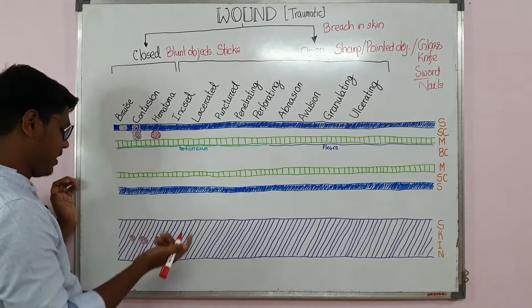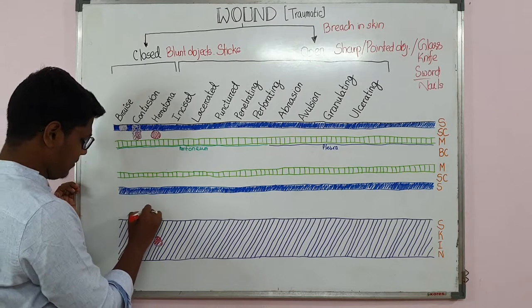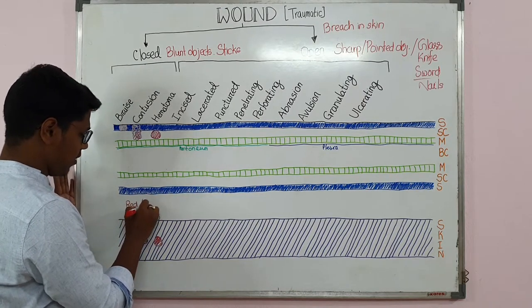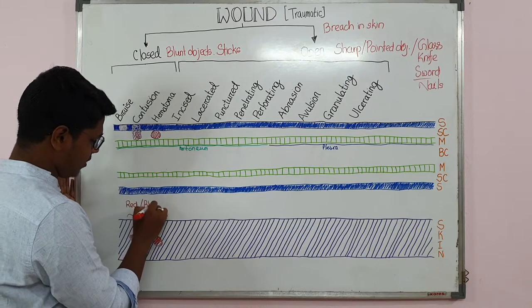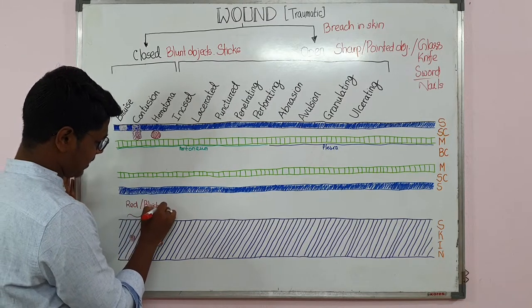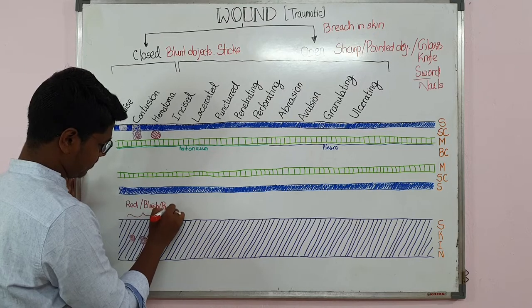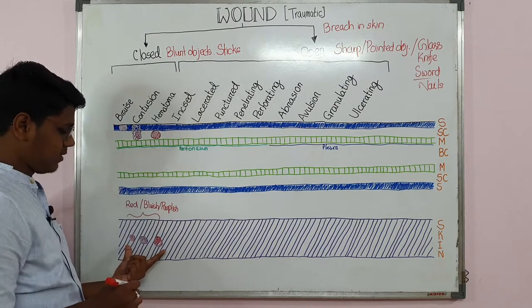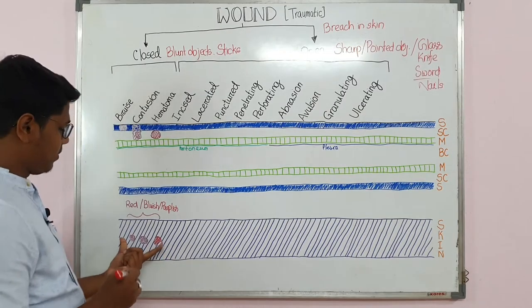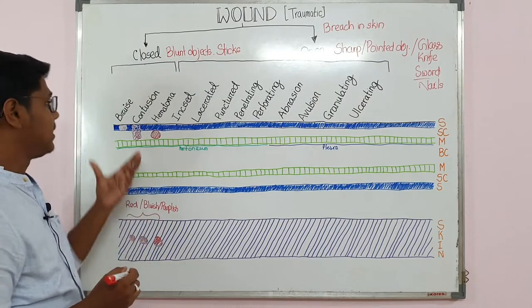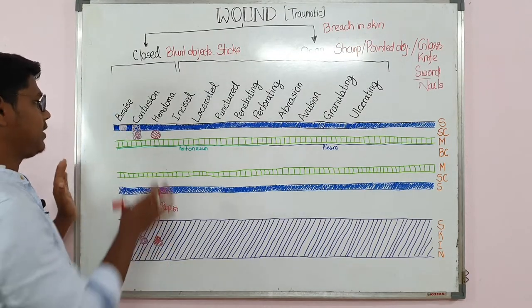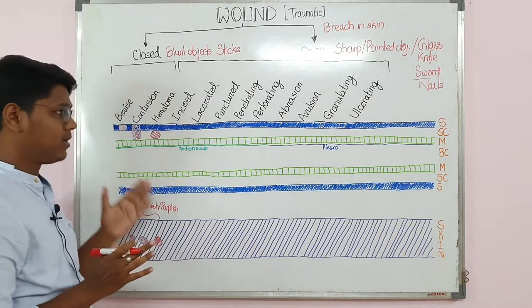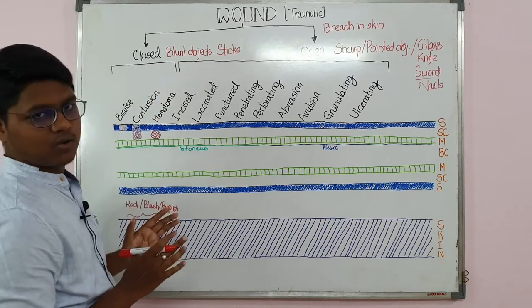The color of bruise or contusion is usually red if it is fresh, or it may turn bluish or purplish. From above the structure you may find this coloration. If the skin is not breached, then it may be bruise, contusion, or hematoma. This ends the closed wounds.